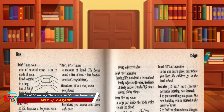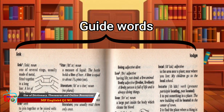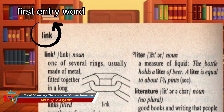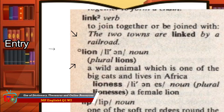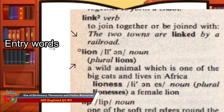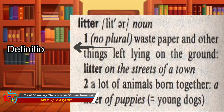To easily find the word you are looking for, there are guide words found on top of the pages in the dictionary. Guide words help us know if the words we are looking for are on the page. The word on the top left is the first entry word of the page and the word on the top right is the last entry word. Entry words are words in the dictionary written in alphabetical order and in bold. The definition explains the meaning of the word depending on the context the word is used.